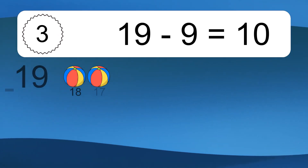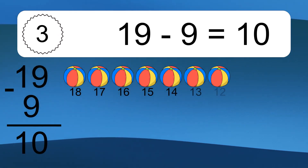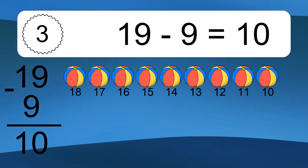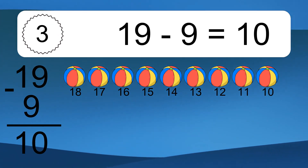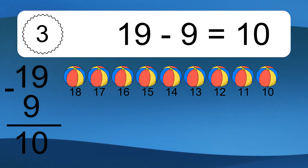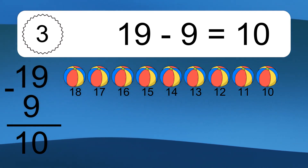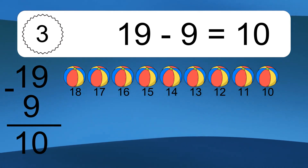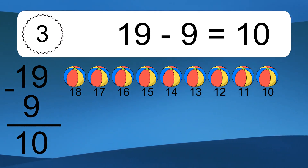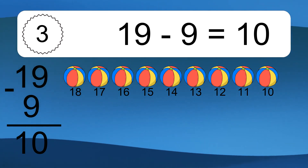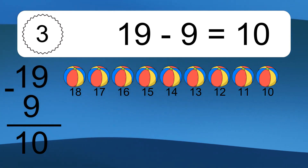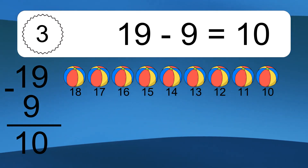19 minus 9 equals what? 19 minus 9 equals 10. Let's count it. 18, 17, 16, 15, 14, 13, 12, 11, 10.